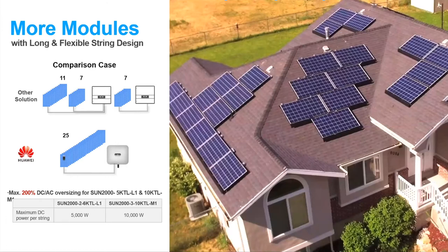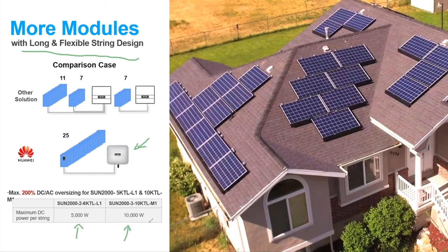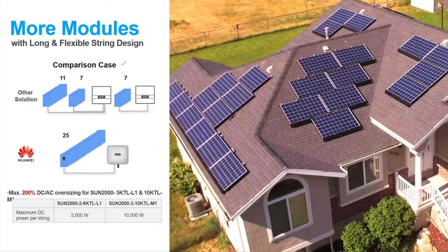Having optimizers on all the PV modules brings some advantages. One of these is that you can have what we call long string design — you can dimension the DC side twice the inverter rated power. So for example, for a 5 kW inverter, you can have up to 10 kW of DC power. In a complex rooftop, by having optimizers, you can connect all of these together. This is also helpful for our storage solution, and I will show you exactly why it is beneficial to have a 2-to-1 DC-to-AC ratio.